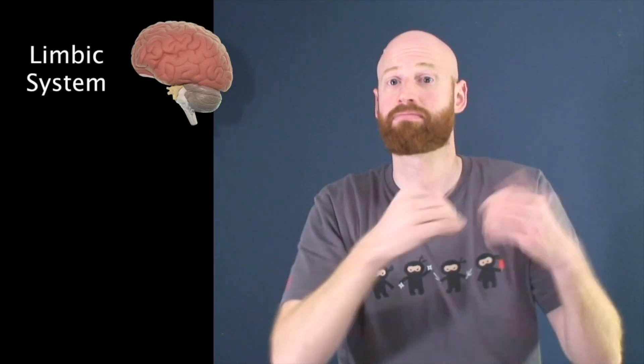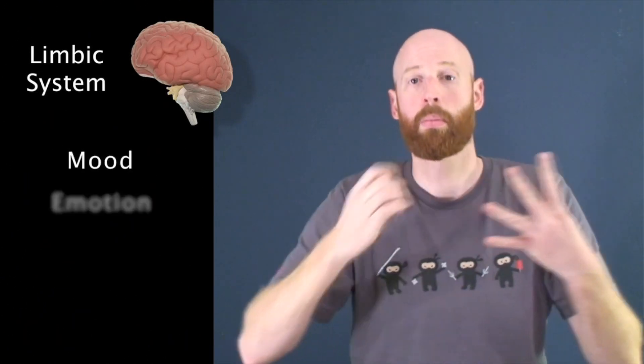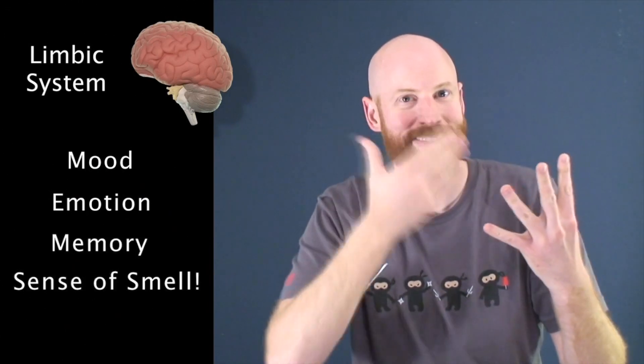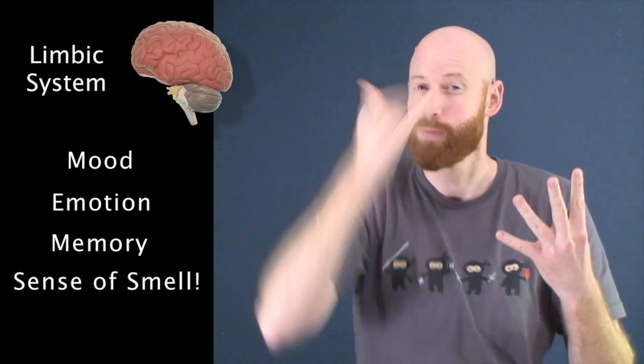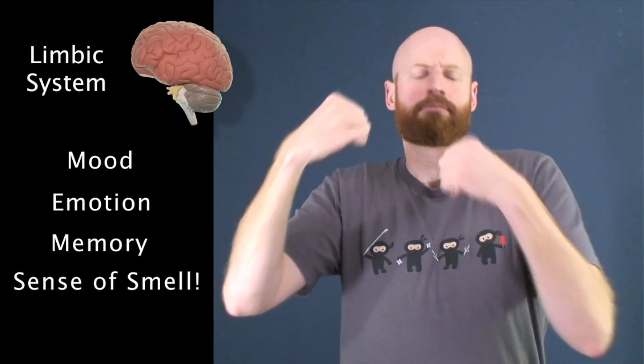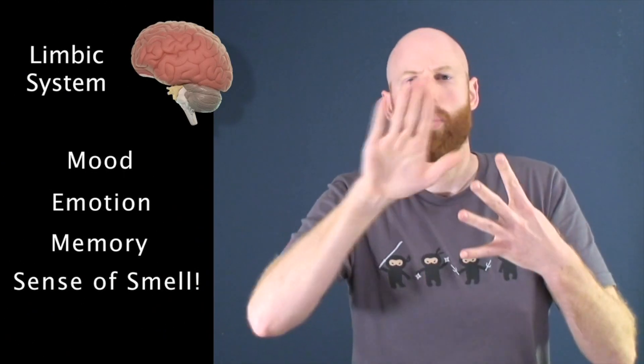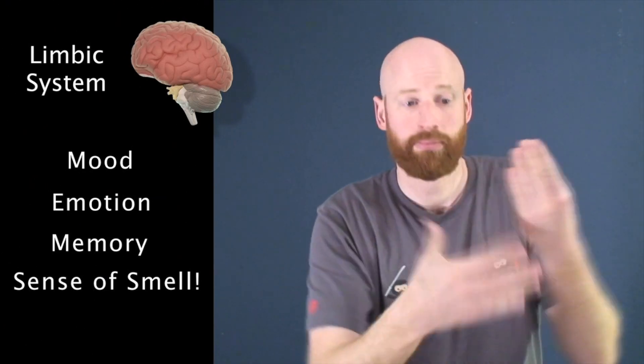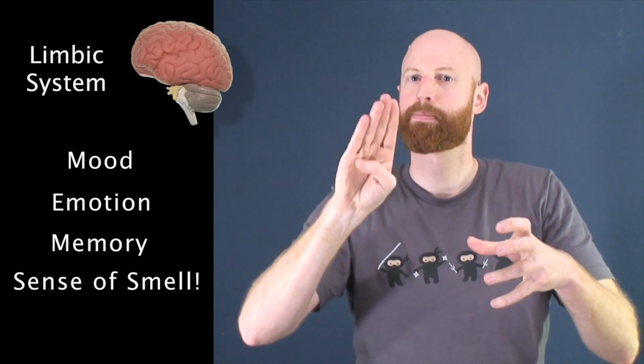The brain has different parts, one of which is the limbic system. The limbic system is responsible for different things including mood, emotion, your memories, and even the sense of smell. So you can see why oftentimes when you smell something, that smell can trigger a strong mood, emotion, or memory. It's because all those things are wrapped up with the sense of smell in the same area of the brain - the limbic system. Let's look at an example. Remember, these are molecules.